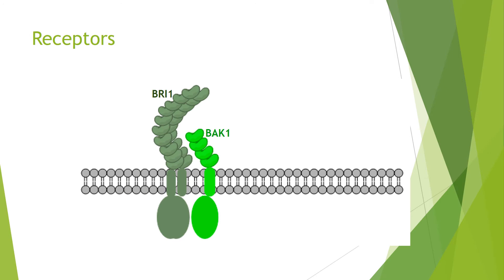These are the brassinosteroid receptors, with BRI1 on the left and its co-receptor BAK1 on the right. BRI1 is a homodimer. Going from extracellular to intracellular space — top to bottom — BRI1 and BAK1 have a large number of leucine-rich repeat regions, then a single transmembrane helix, then a juxtamembrane region, then a kinase domain which phosphorylates serine, threonine, and tyrosine residues, represented by an oval. Finally, there is a C-terminal region, which is actually auto-inhibitory — important for later.